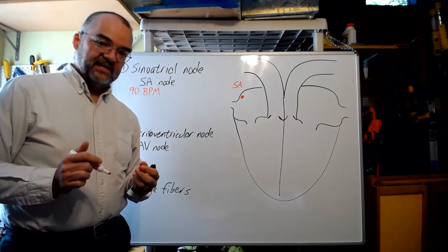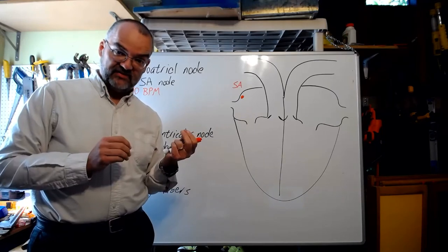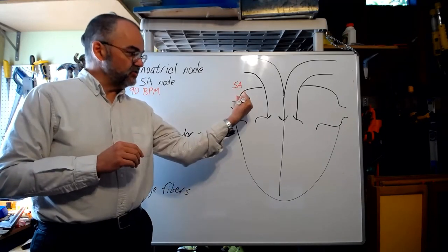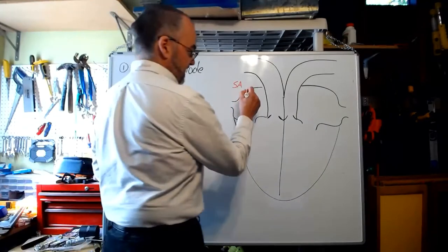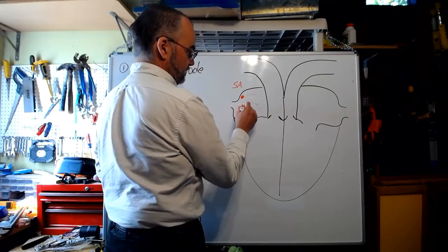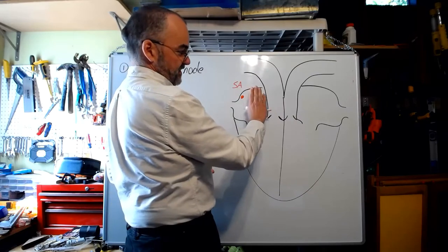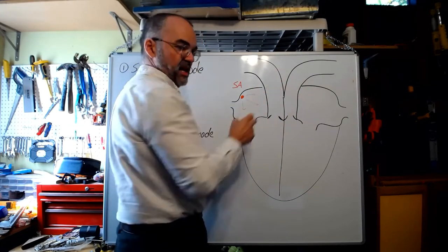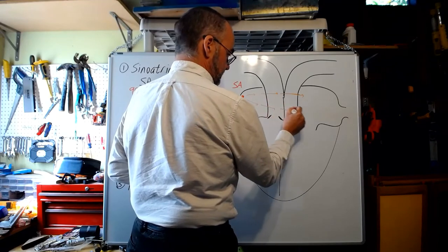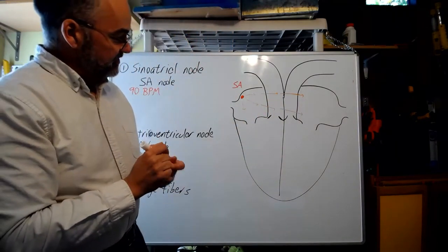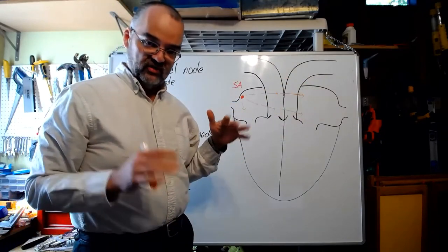The auto-rhythmic cells of the SA node are linked to the muscle in the atrial wall. When the action potential begins in the SA node, it passes through gap junctions into the cardiac contractile cells, which pass it from cell to cell across the atria — shown here in orange. The signal travels across from one atrium to the other in an overall downward direction, causing the atria to contract in a downward wave.